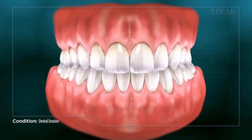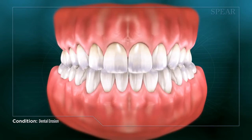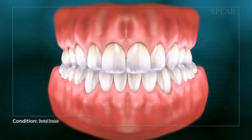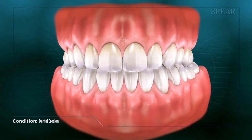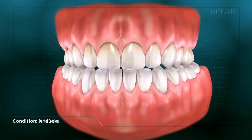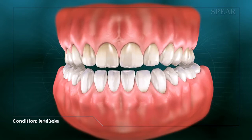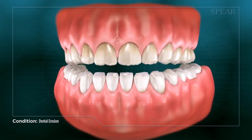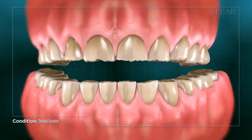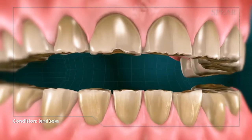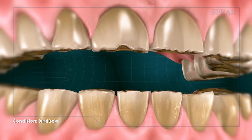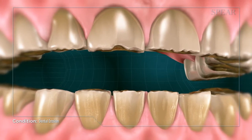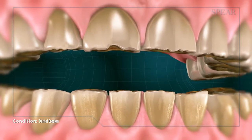Excessive tooth erosion causes many oral health complications, including discoloration, unattractive and irregular tooth levels, uncoordinated chewing movements, jagged and sharp tooth edges, tooth pain, and eventual loss of the teeth altogether.